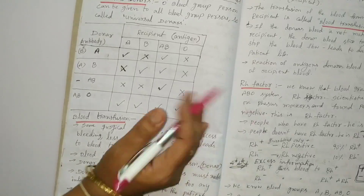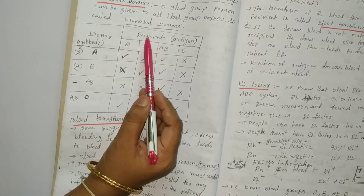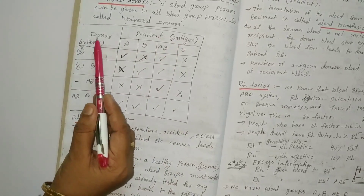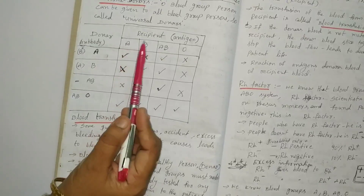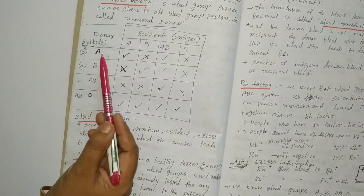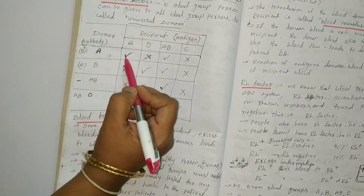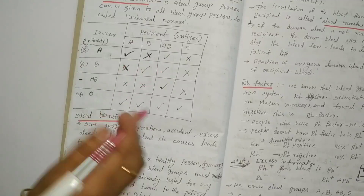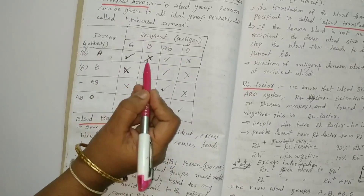Here is a table showing donor and recipient. Blood transfusion depends upon recipient antigen and donor antibody. Donor blood groups are A, B, AB, O. Recipient blood groups are A, B, AB, O. If the blood is matched, we tick correct. If the blood is not matched, we use a wrong mark.